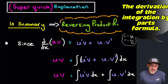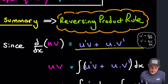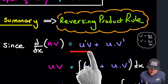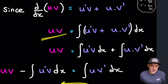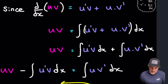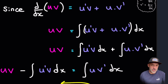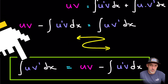Here's a quick explanation of where the integration by parts expression comes from. Imagine differentiating a product: you get du/dx times v plus u times dv/dx. Integrating those two terms on the right gives back uv. Moving the du/dx times v term over to the left by subtracting it from both sides leaves the integral of u times dv/dx. A quick rearrangement gives the expression you see in all the textbooks.